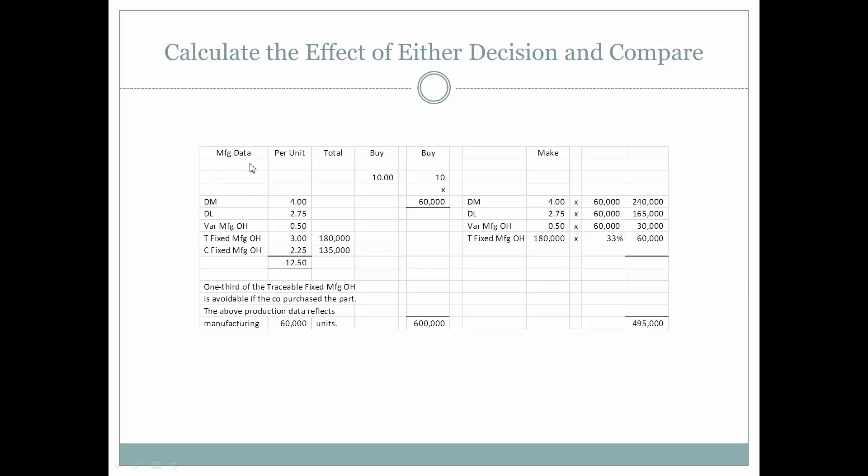We have manufacturing data on a per unit basis. We have this information for the variable expenses associated with making this part. Specifically, direct materials, direct labor, and variable manufacturing overhead.